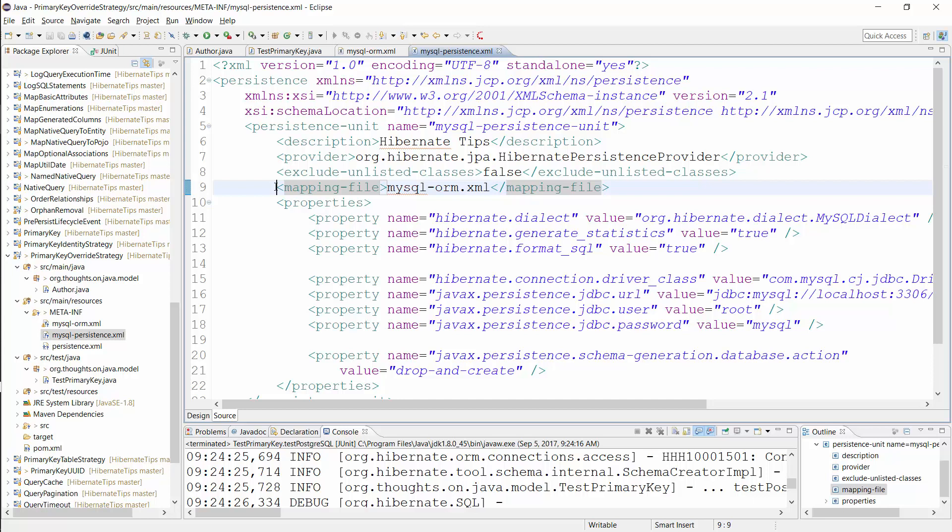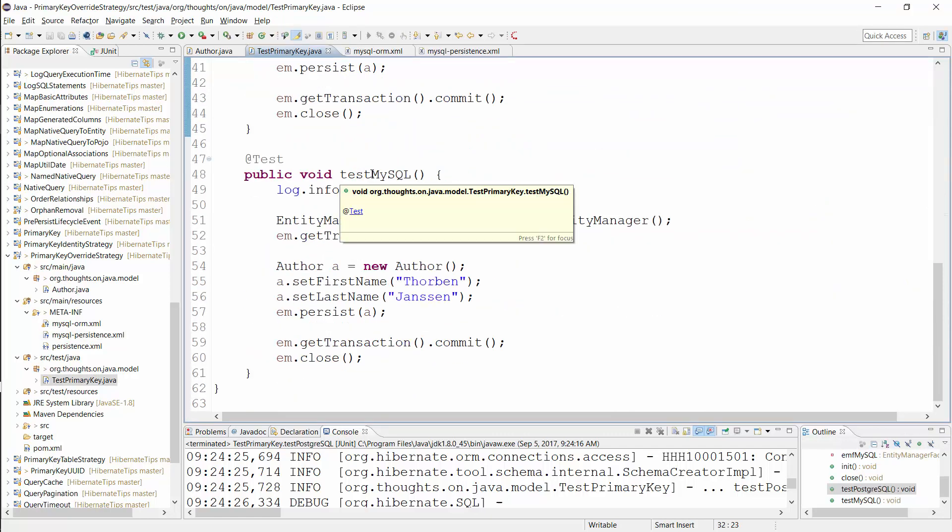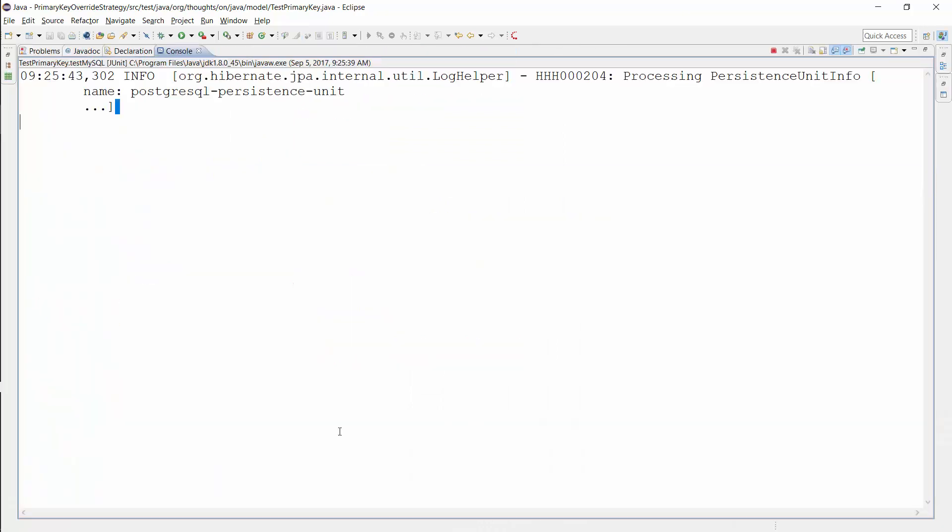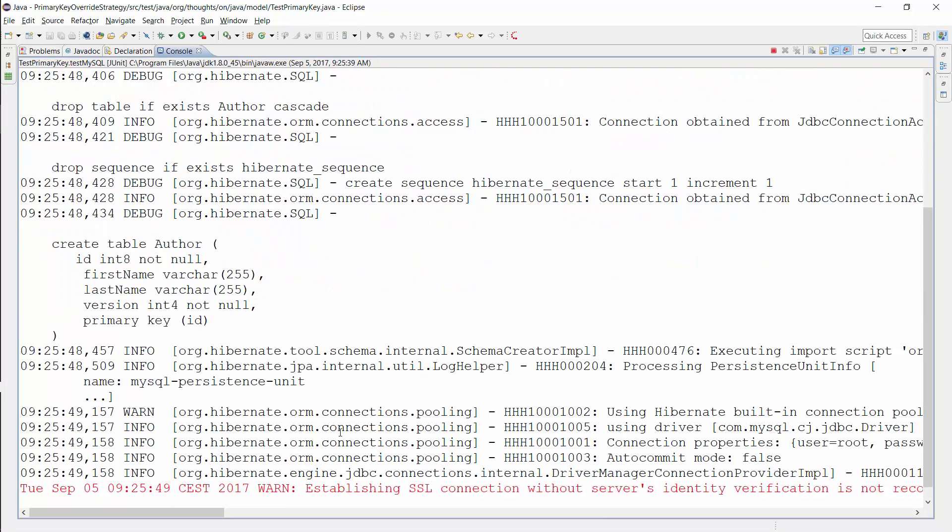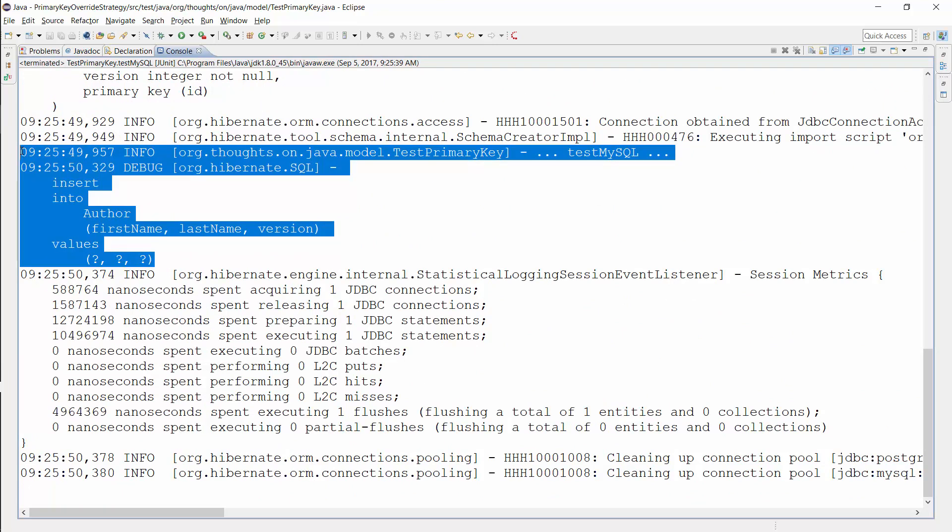I can now use the configuration to create an EntityManager and persist an Author entity. As you can see in the log messages, Hibernate didn't select a primary key value from the sequence. Instead of the sequence strategy, it used the identity strategy that we defined in the XML file.